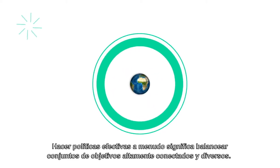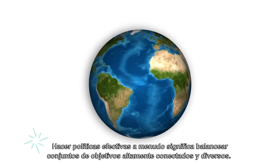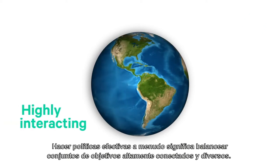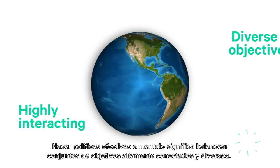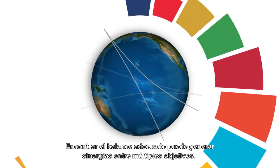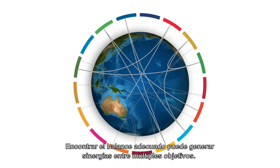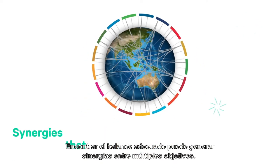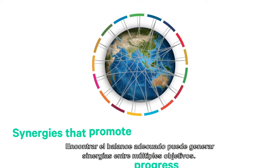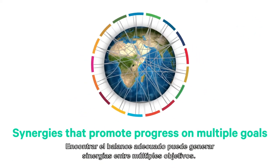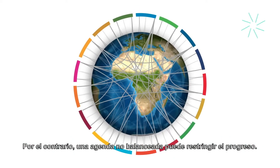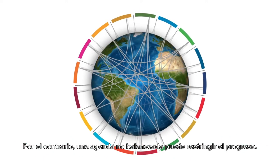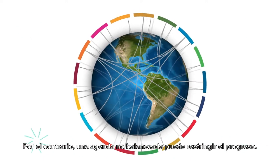Making effective policy often means balancing highly interacting but diverse objectives. Striking the right balance can unlock synergies that promote progress on multiple goals. Failing to do so can restrict progress and see momentum lost.